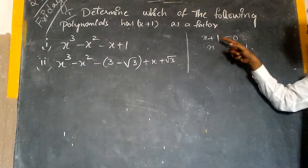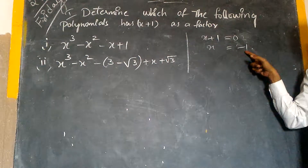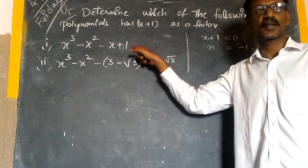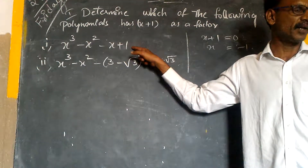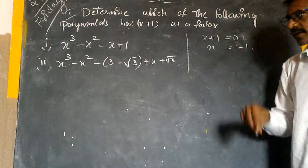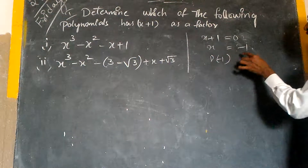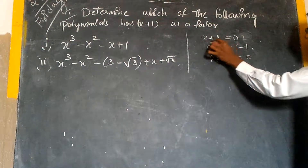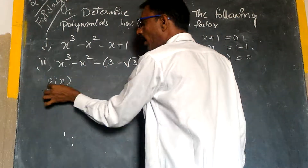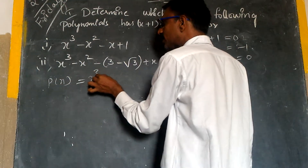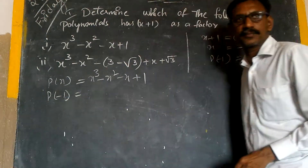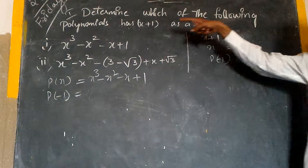This linear polynomial has zero at x equals minus 1. This is the value. When we substitute it into the given polynomial — that is the cubic polynomial — if it gives zero, then by the Factor Theorem, x plus 1 is a factor. So if p(minus 1) equals zero, then x plus 1 is a factor of that polynomial.